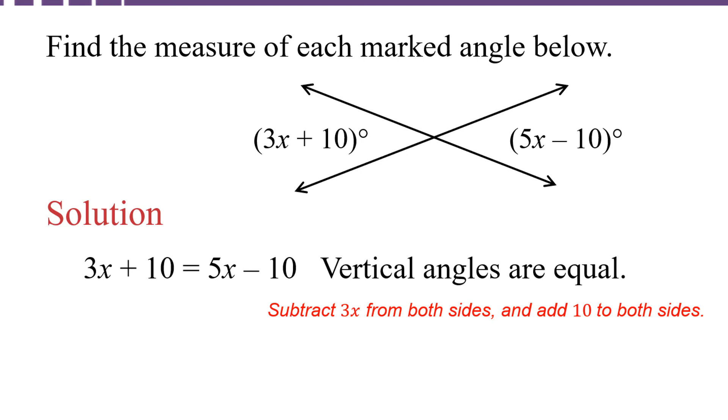So I'm going to subtract 3x from both sides of this equation, and I'm going to add 10 to both sides. This is going to give me 20 equals 2x. Next I'm going to divide both sides by 2. This is going to give me x equals 10.